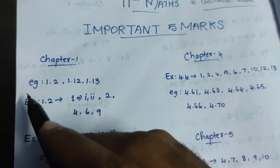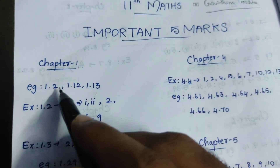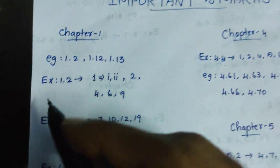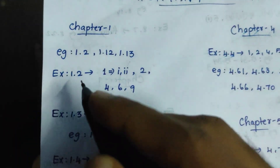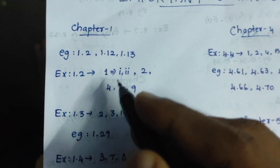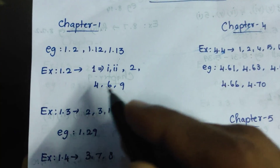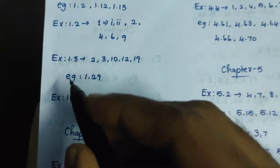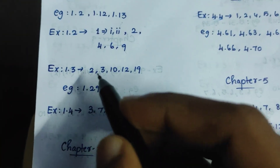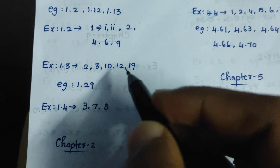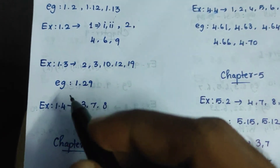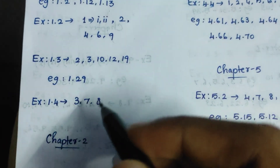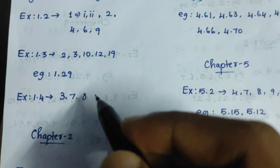Chapter 1, Example 1.2, Example 1.12, Example 1.13. Exercise 1.2: 2.469. Exercise 1.3: 2.3, 10.12, 19. Example 1.29. Then Exercise 1.4: 3, 7, 8.